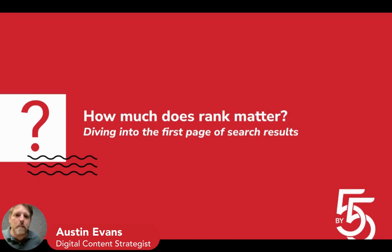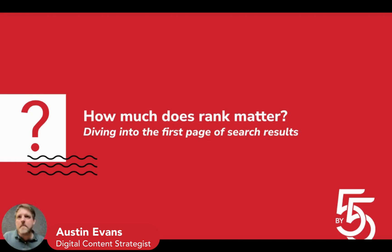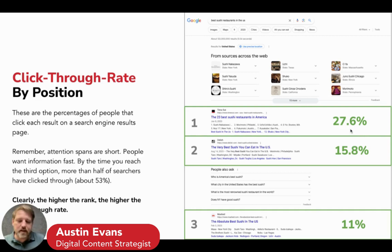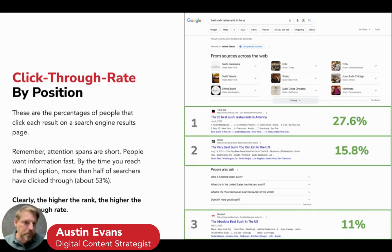Let's talk about how much rank matters on the search engine results page — or SERP, S-E-R-P. What does it mean to be number one versus number five versus number ten versus number fifteen? As you can imagine, the spot at the top gets the most clicks. The first spot gets just shy of 30% — about 27.6% — of people who land on the page click that result. That cuts about in half for number two at 15.8%, and drops down to 11% for number three.